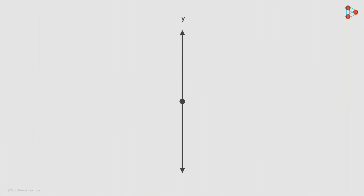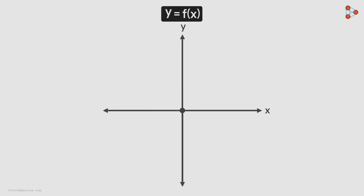Imagine a quantity denoted by variable y which is continuously changing. But how it changes is controlled by another quantity denoted by variable x. We can say that the variable y, called the dependent variable, is a function of the variable x, called the independent variable. The function f tells us how the value of y changes with the value of x.